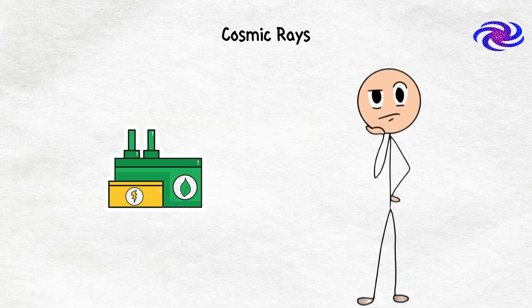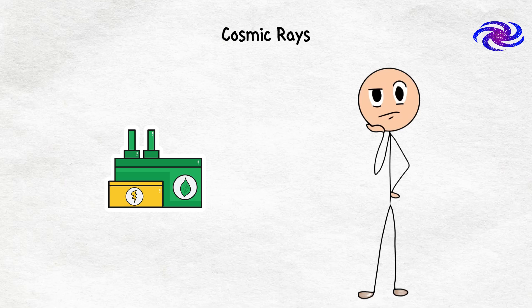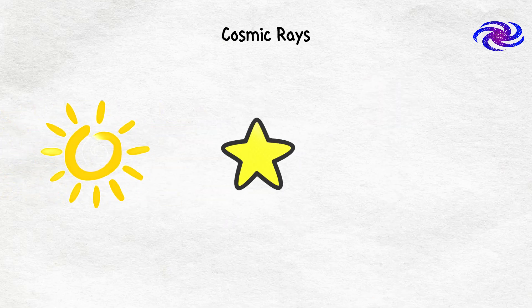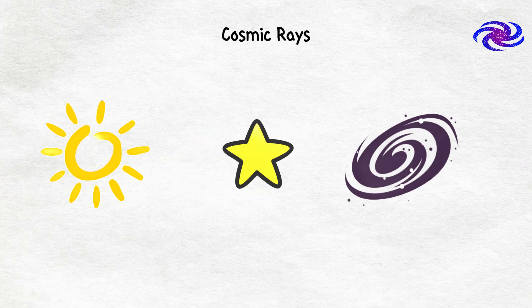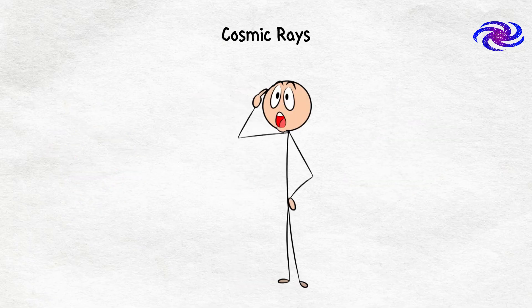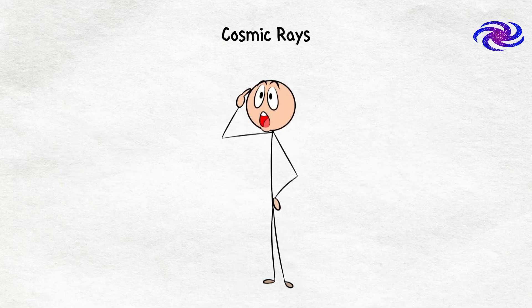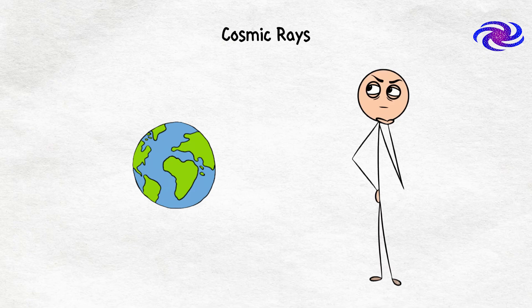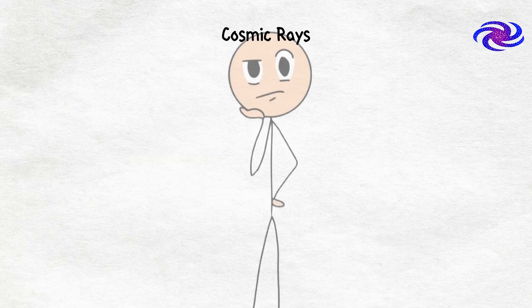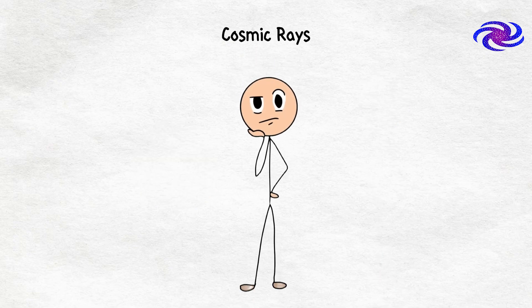Cosmic rays. They are high-energy particles that come from all over the cosmos, our sun, distant stars, even galaxies far, far away. These rays are zipping around at nearly the speed of light. And while most of them are harmless thanks to Earth's atmosphere, a few of these little guys manage to sneak through.